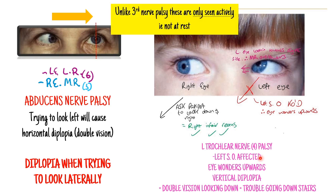Unlike in oculomotor nerve palsy, trochlear and abducent nerve palsies are only seen actively - when you ask a patient to follow your finger. Normally their eye positions will be fairly normal; it's not going to be down and out at rest, unlike the third nerve palsy. These are only effective when you ask the patient to move.